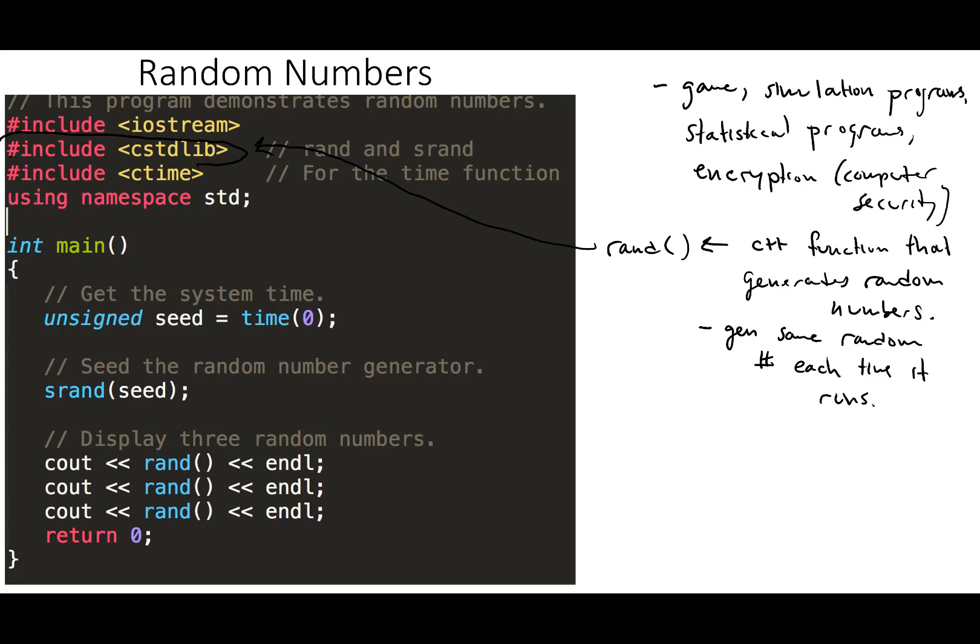So you can see what the problem with that would be. If you're generating the same random number every time the program runs, it's not really all that random. So the way that we fix that is we need to seed the random number generator. So this RAND works by generating a random number, but if you don't seed it with something, it's always going to seed it with the same number, and so it's always going to generate the same random number.